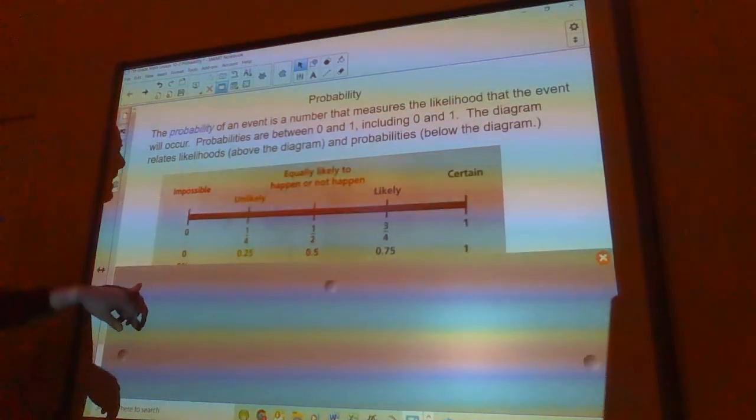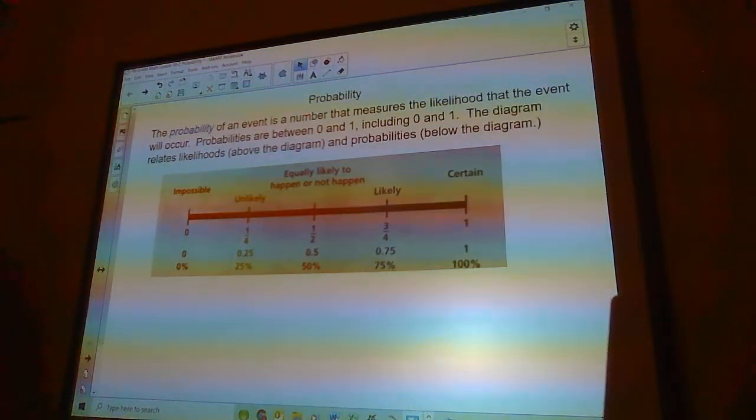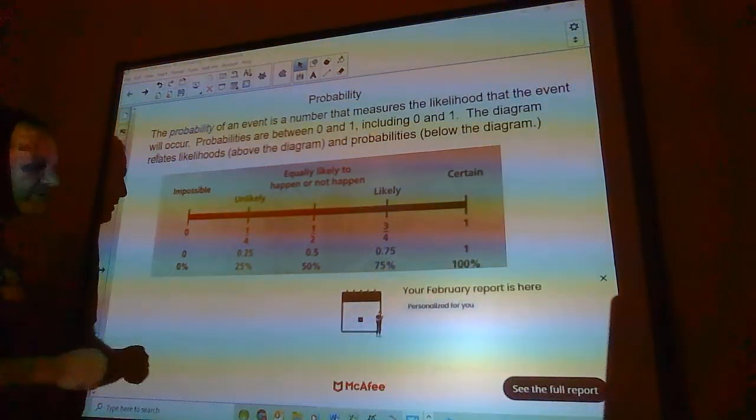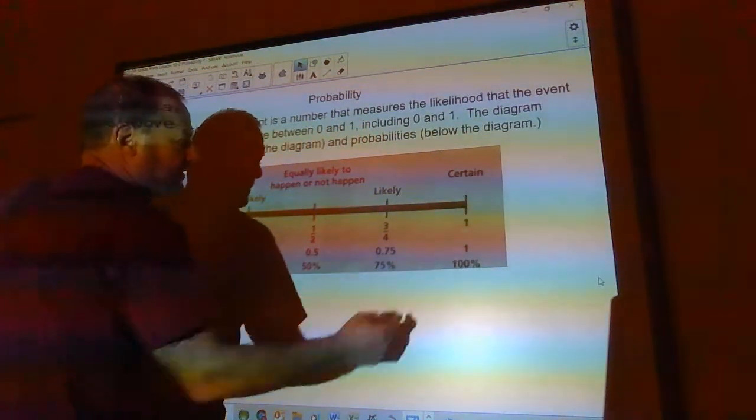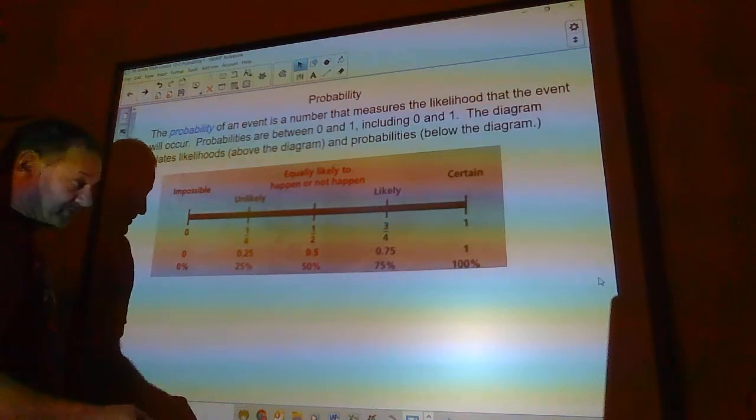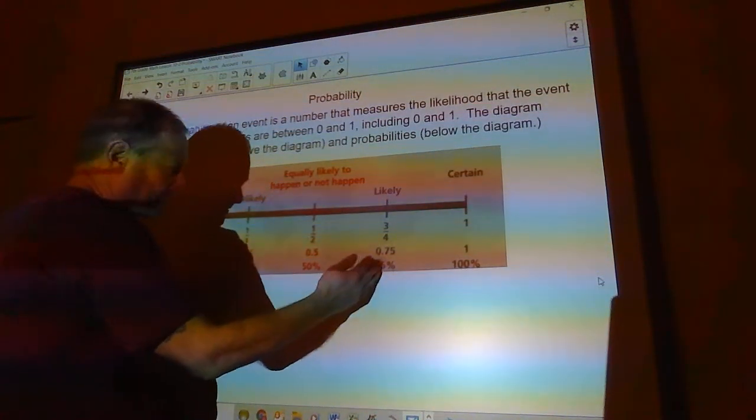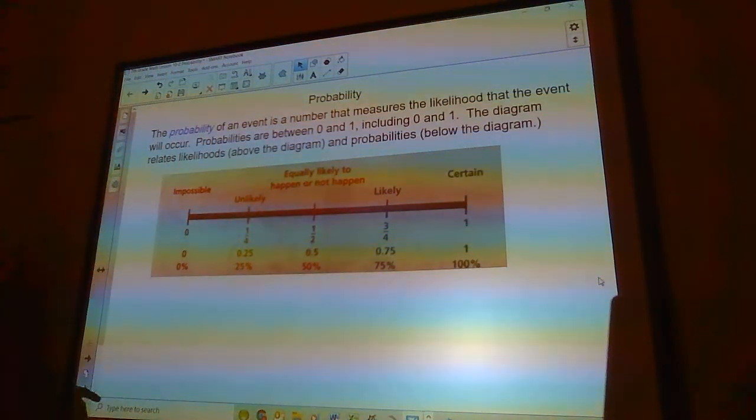This is a diagram here that shows likelihoods that something's going to occur. Here you have 0, that's impossible. And here is 1, which is absolutely certain it's going to occur. 0.5 or 50% could go either way. Anything above 75% is likely to occur. Anything below 25% is unlikely to occur. Take a second and look at that picture there a little bit and make sure you understand what that means.